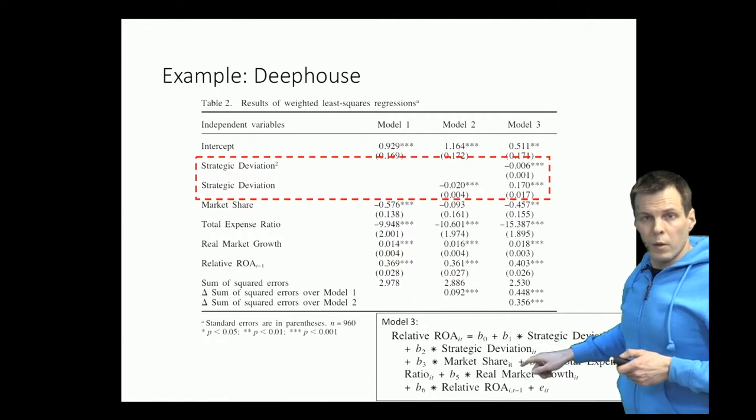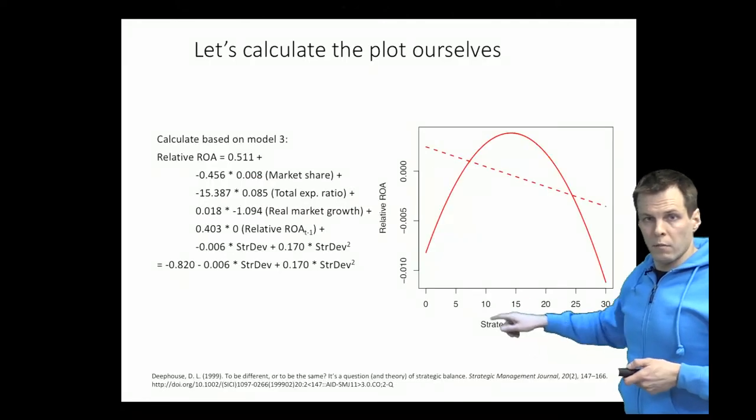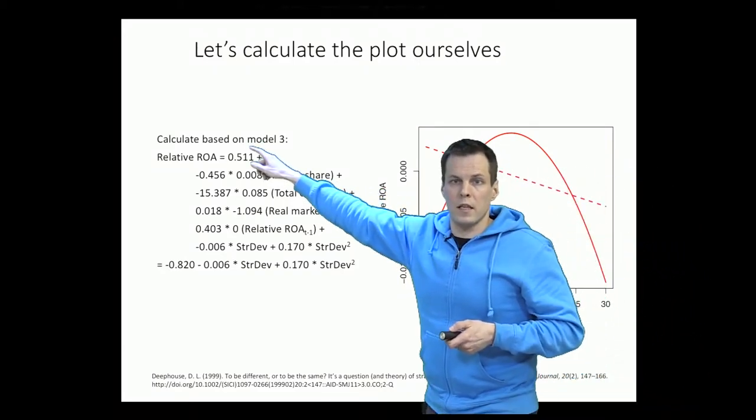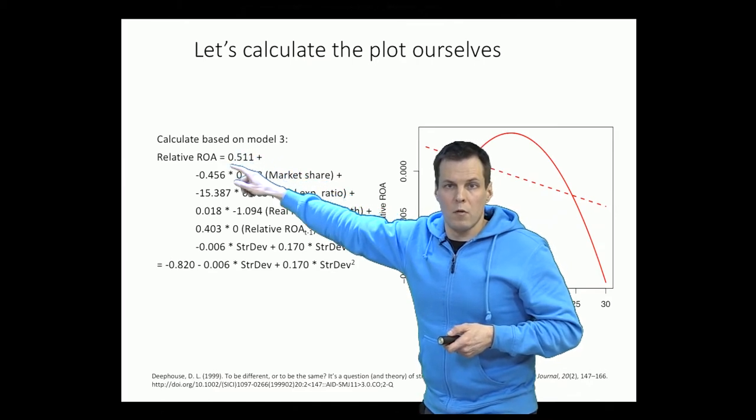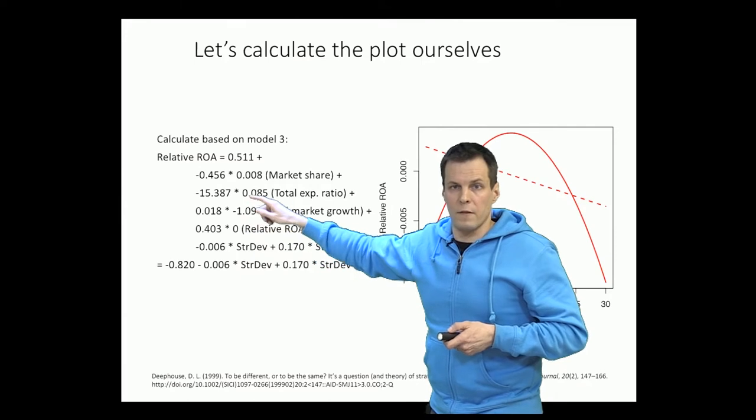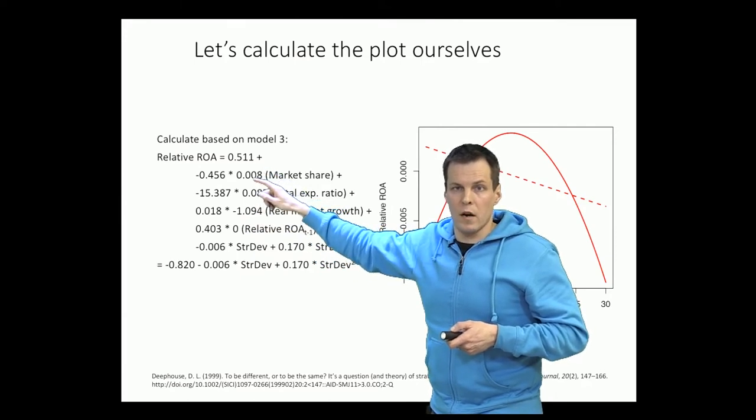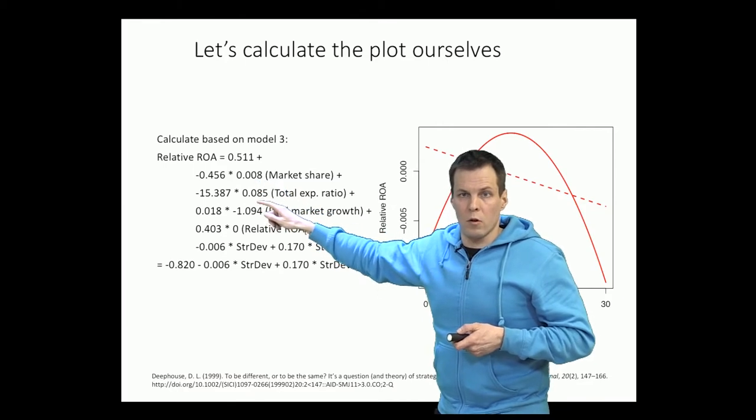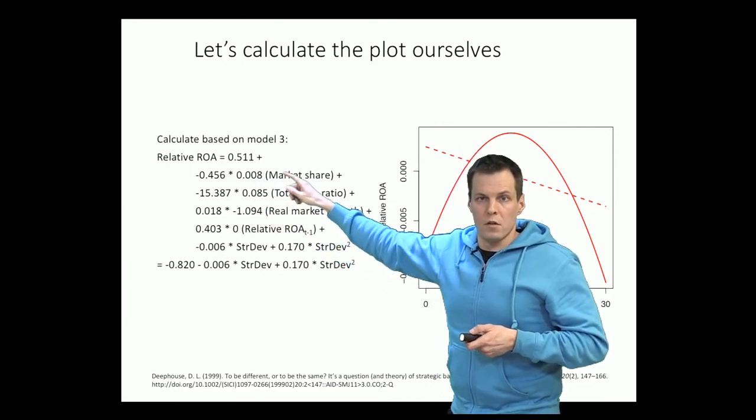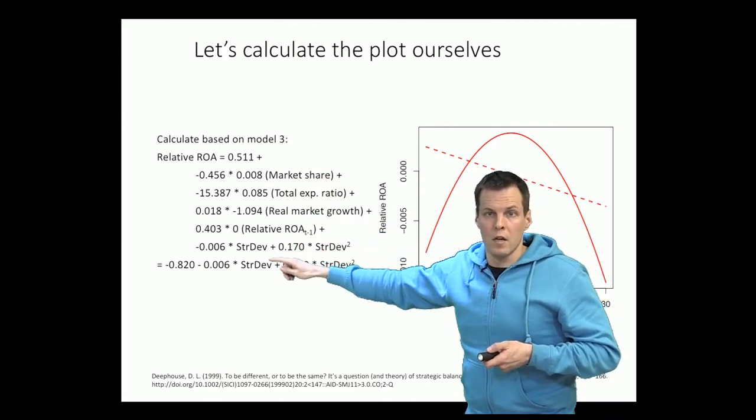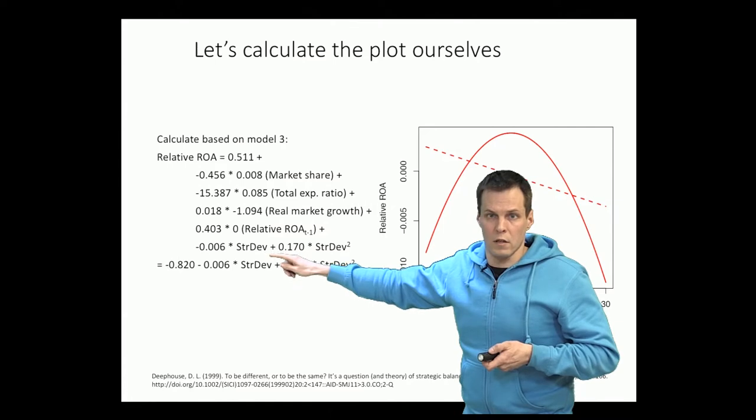And we plug in the regression estimates to this model 3. So we have the model 3 equation here. Then we have the numbers here. That's the intercept. Then we have regression coefficients here. And then we have means of these different variables. So mean of market share is 0.008 and total expense ratio is 0.085. So we hold everything else at their means. And then we have our strategic deviation and strategic deviation squared.